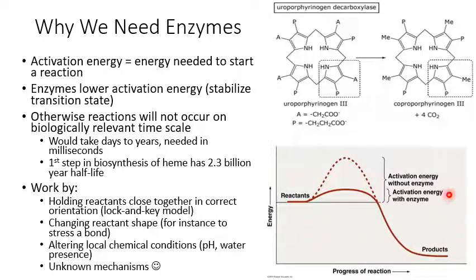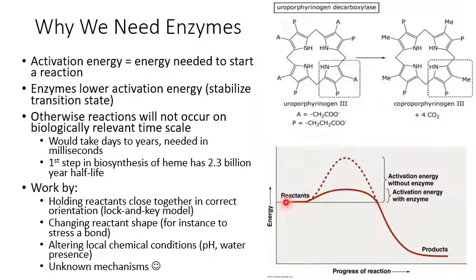This graph shows basically how enzymes work. You have reactants on the left and products on the right, with energy on the y-axis. This is a spontaneous reaction because reactants have more energy than products. But there still needs to be an activation energy. In the dotted line, you can see the standard activation energy without an enzyme. If you add the enzyme, the activation energy goes way down to a much lower level. Now you just need to put in the teeniest little bit of extra energy for the activation energy, and then the reaction will go forward.